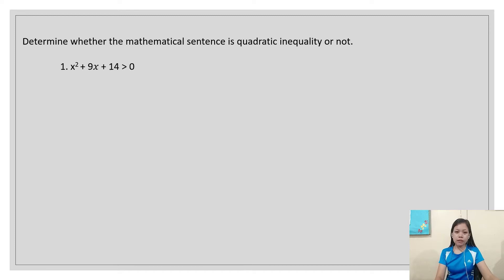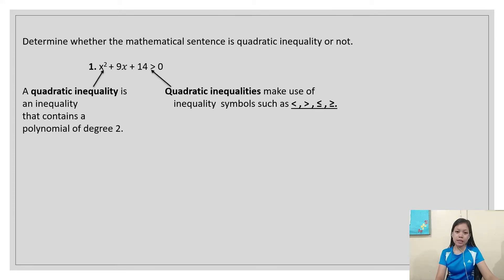So let us have an example. Determine whether the mathematical sentence is a quadratic inequality or not. We have x² + 9x + 14 > 0. A quadratic inequality is an inequality that contains a polynomial of degree 2. Since the equation has a polynomial of degree 2, it is quadratic.